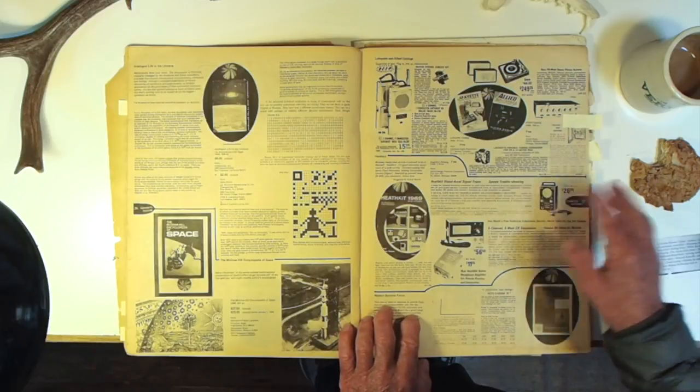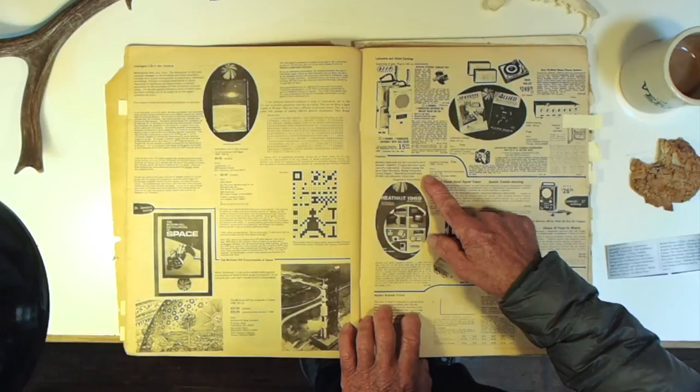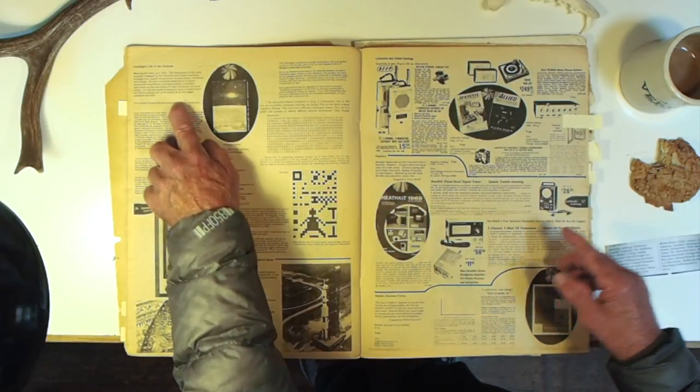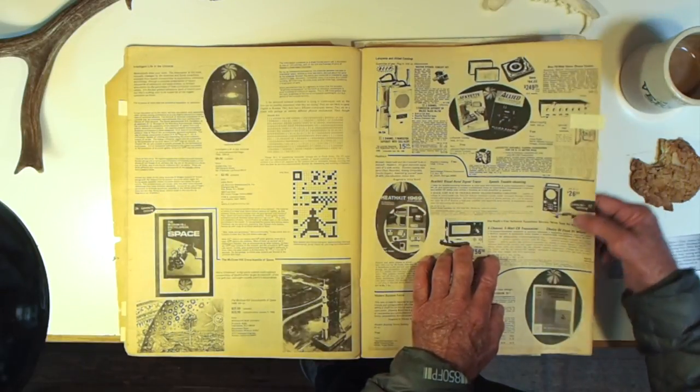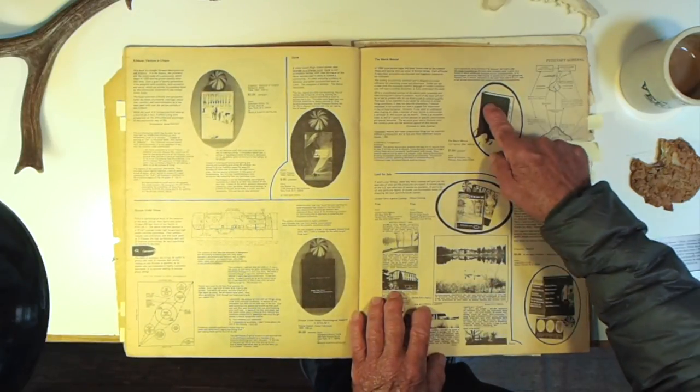Here's catalogs. Here's the Heathkit catalog, which included building your own computers. Here was a book, Intelligent Life in the Universe. I mean, building computers. This was almost 50 years ago. Here was the medical manual.